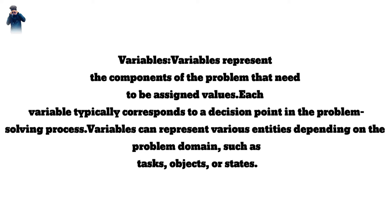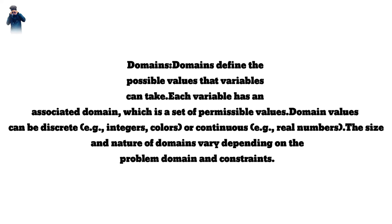2. Domains. Domains define the possible values that variables can take. Each variable has an associated domain, which is a set of permissible values. Domain values can be discrete — for example, integers or colors — or continuous — for example, real numbers. The size and nature of domains vary depending on the problem domain and constraints.